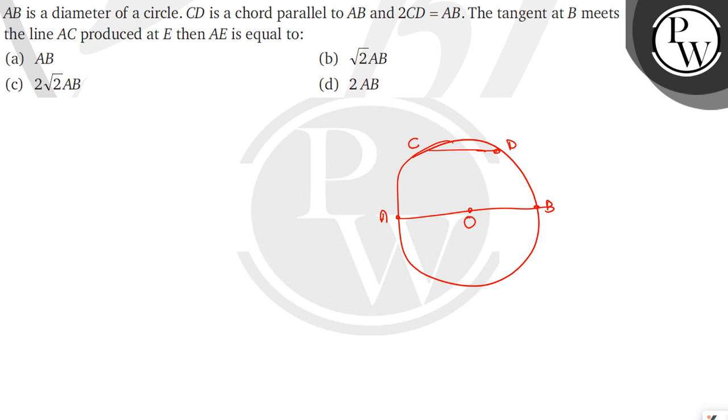And in the question it is given that 2CD is equal to AB. So we can write this as let CD is equal to X, so we can say that AB must be 2X. So CD is X and AB is 2X. And AO must be X then and OB will also be X.